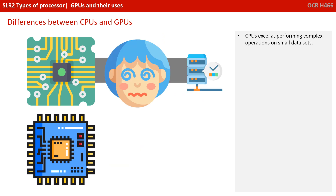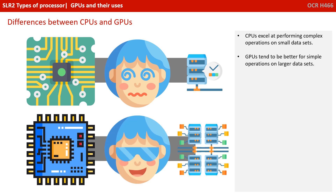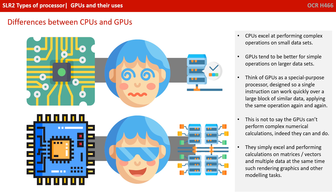CPUs tend to excel at performing complex operations on small datasets, whereas GPUs tend to do better for very simple operations on very large datasets. Think of GPUs as a special purpose processor, designed so a single instruction can work quickly over a large block of similar data, applying the same operation again and again.